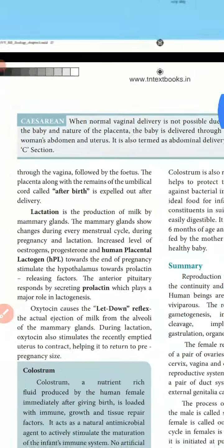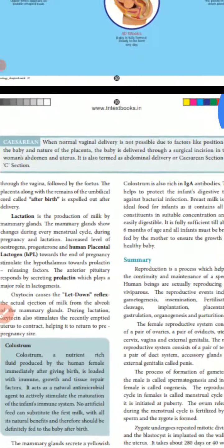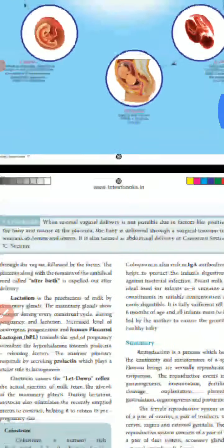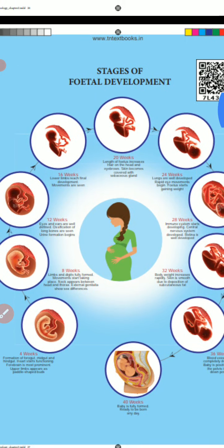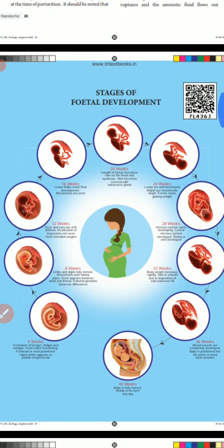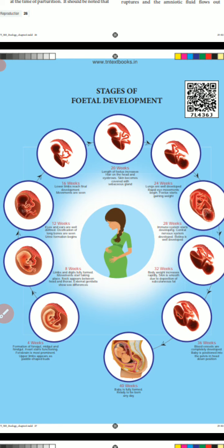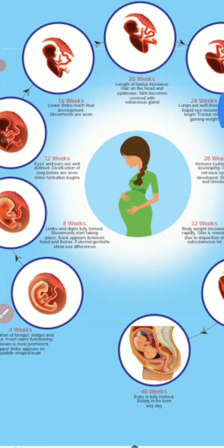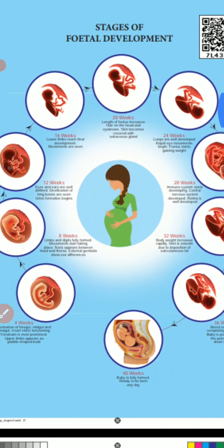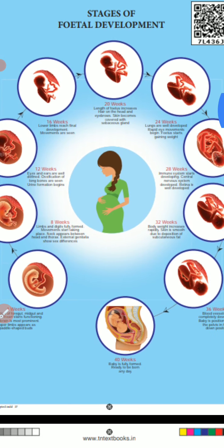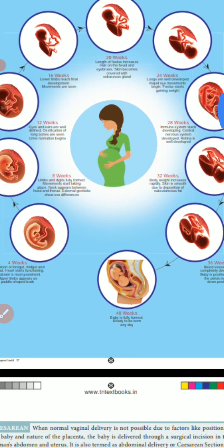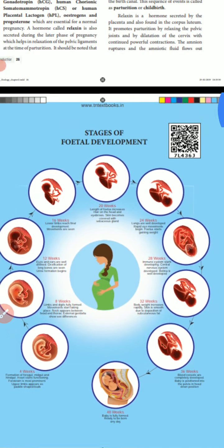Caesarean section is another important topic for two-mark questions. This picture shows the stages of fetal development through the three trimesters — each trimester lasting three months, for a total of nine months.